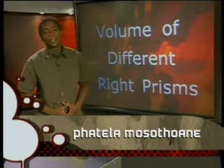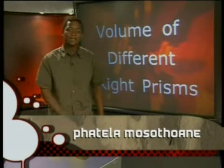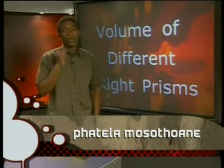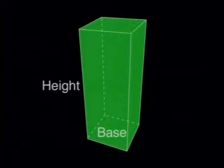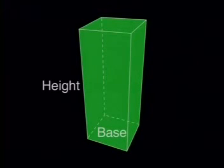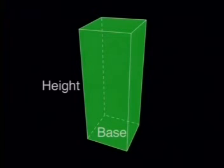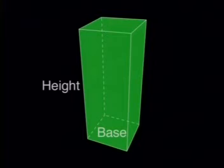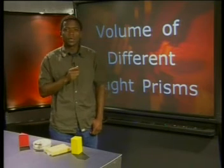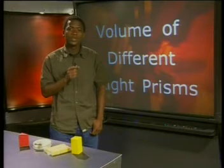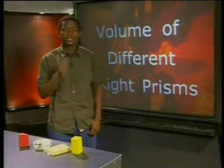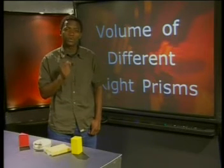Hi, my name is Patel. In the past few lessons on volume, we have seen that to work out the volume of right prisms, we need to know two things: firstly, the shape of the base of the solid, and then the perpendicular height of the solid. In this lesson, we are going to look at how we can use that information to determine the volume of other right prisms.